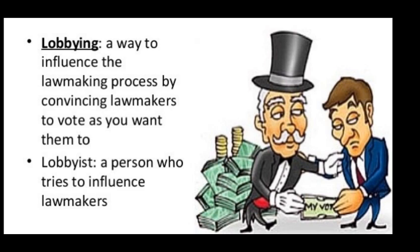Number three: lobbyists routinely offer members of Congress and their staffers lucrative jobs at their firms or their clients' companies once they leave office. This practice is often called the revolving door. As one lobbyist explained: 'When we would become friendly with an office and they were important to us, I would say to him or her at some point — when you're done working on the Hill, we'd very much like you to consider coming to work for us. The moment I said that to them, that was it. We owned them. Every request from our office, every request of our clients, everything that we want — they're gonna do.'